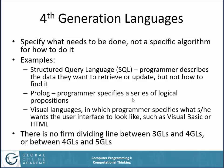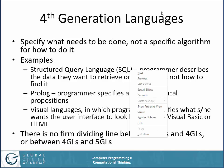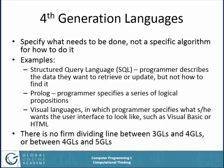Fourth generation languages specify what needs to be done, not how to do it. Remember, third generation languages were procedural: 'x equals y plus 7,' 'for i starting at 14 up to 32 incrementing by ones do the following,' 'if the value of variable x is less than 17 perform this statement else perform some other statement.' Those are third generation examples. In a fourth generation language, you specify what needs to be done, not how. Like structured query language, or SQL — some of you have probably heard that acronym.